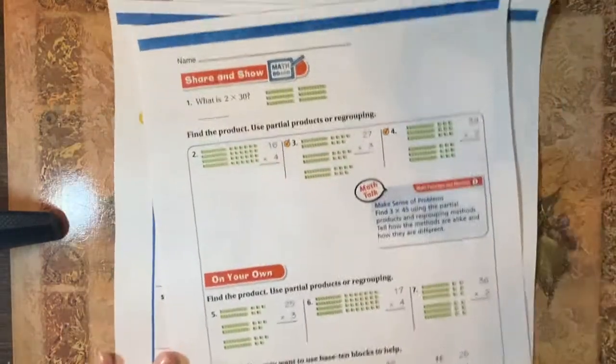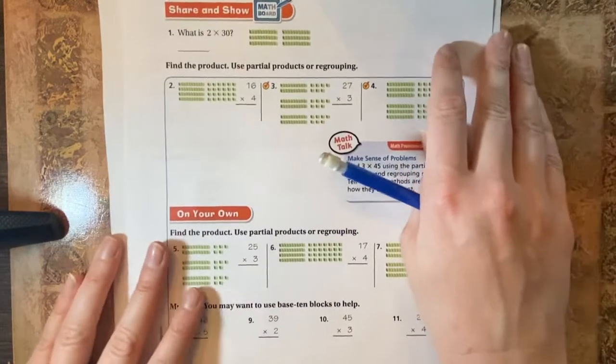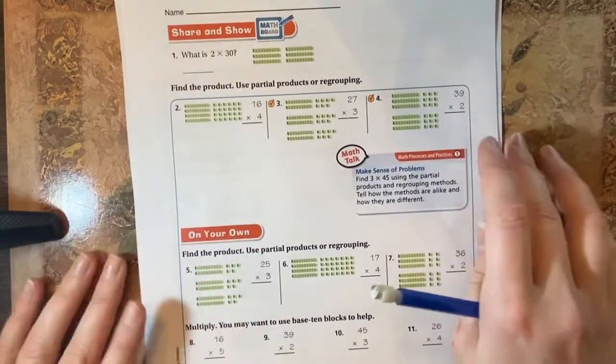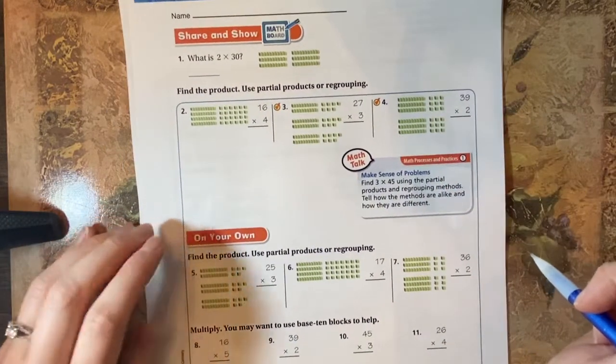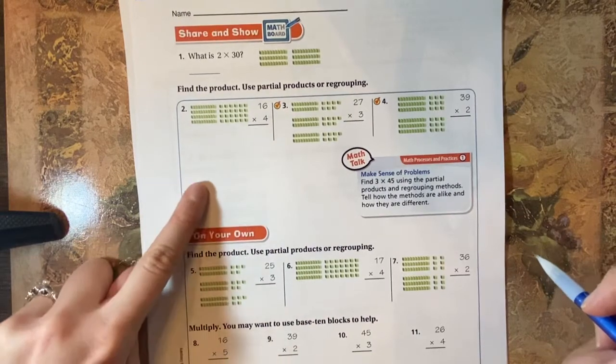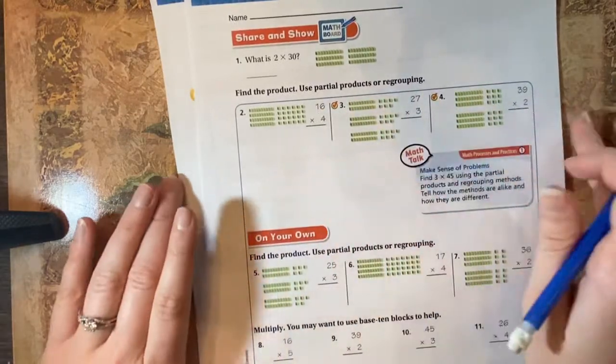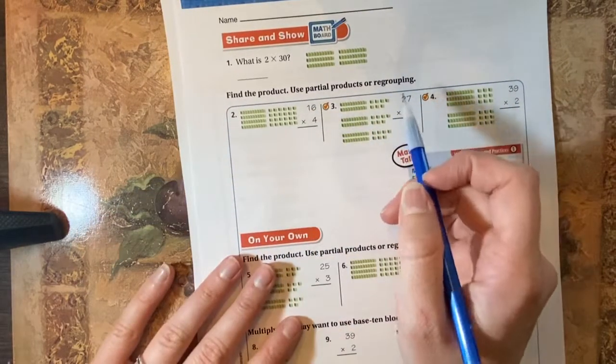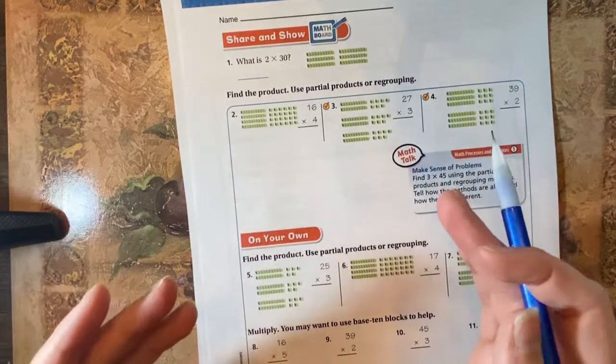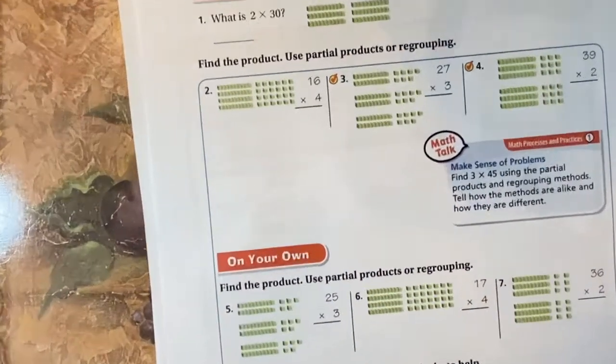So now you guys are going to be doing these problems on your own. This is a completion grade. You are supposed to do the odd problems. So I'm going to do some even examples for you, and then you're going to do the odd problems on your own. So right here we have 16 times four. So you get to choose. I'm going to show you both ways. You get to choose which one you do.